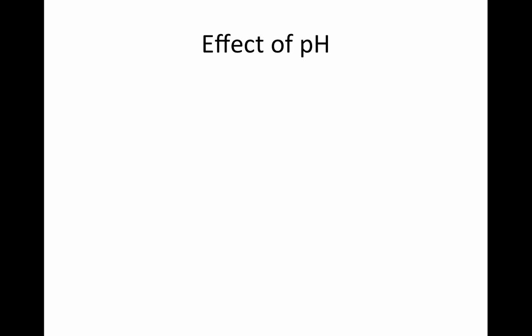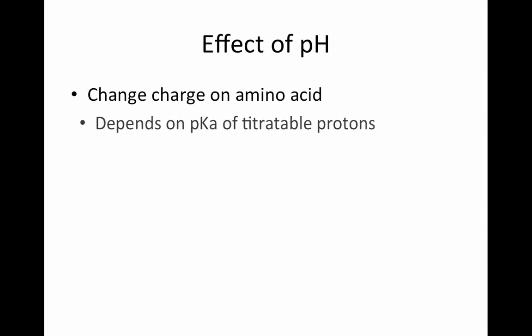Amino acids have both acidic and basic regions on them, which makes their behavior in solutions of varying pH rather unique. By changing the pH of the solution, we can actually change the overall charge on an amino acid. This process depends on the pKa of what we call titratable protons — hydrogen atoms that will dissociate from the amino acid due to a change in pH during an acid-base titration.